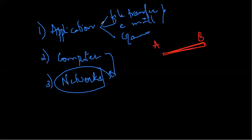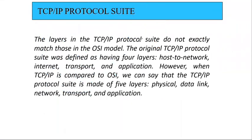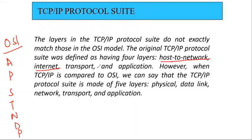With these concepts in mind, the TCP/IP model was given five layers. Before we see the five layers, we will compare it to the OSI model. The layers in the TCP/IP protocol suite do not exactly match those in the OSI model. The original TCP/IP protocol suite was defined as having four layers: host-to-network, internet, transport, and application. The OSI model has seven layers: application, presentation, session, transport, network, data link, and physical.